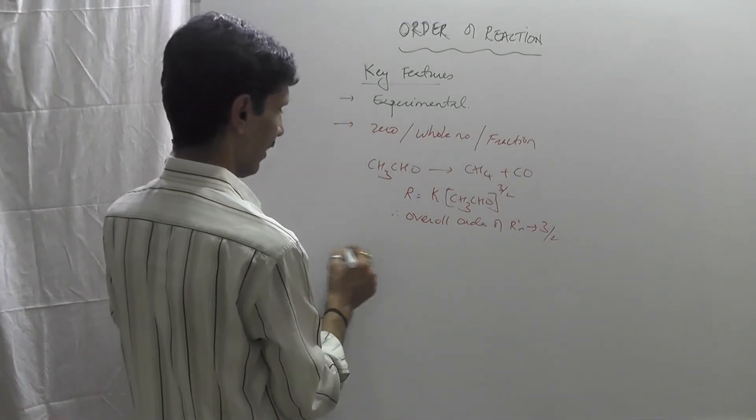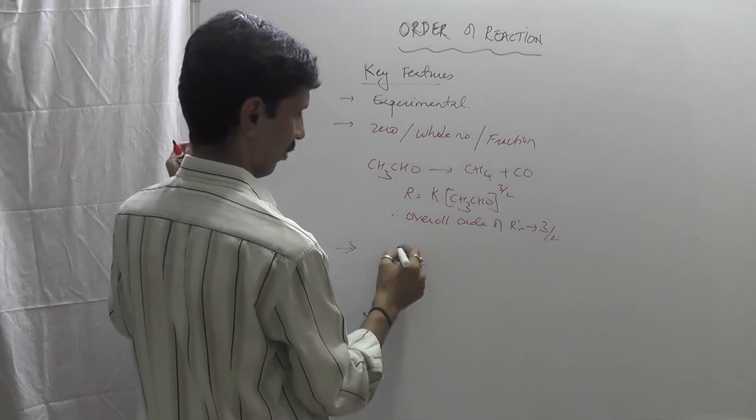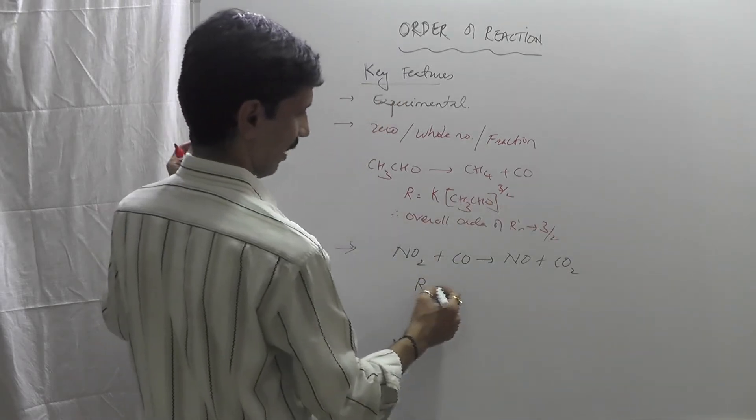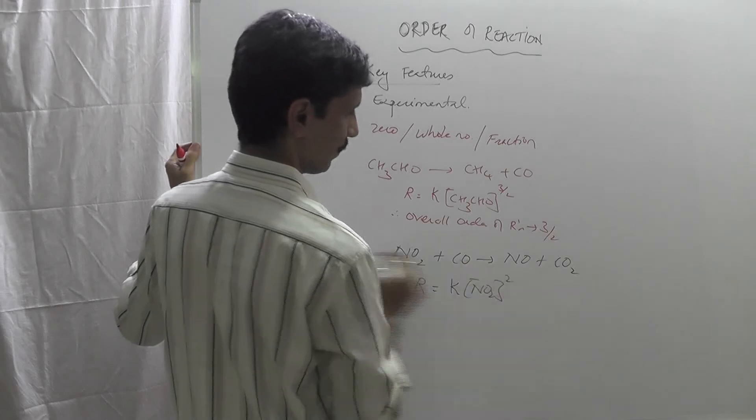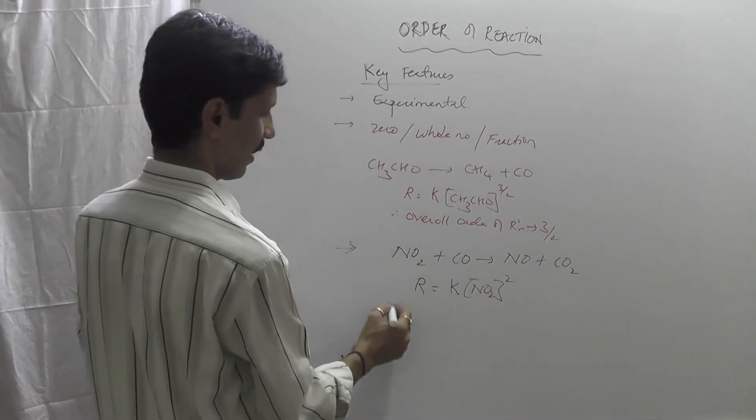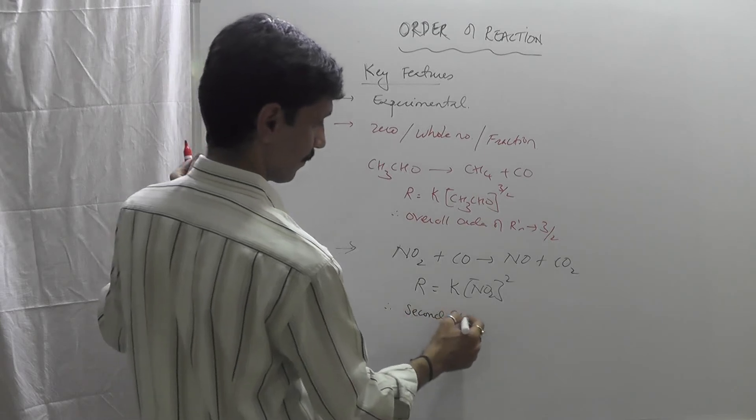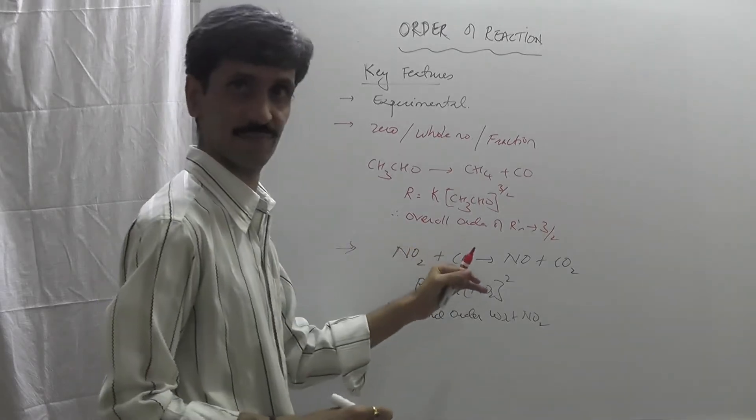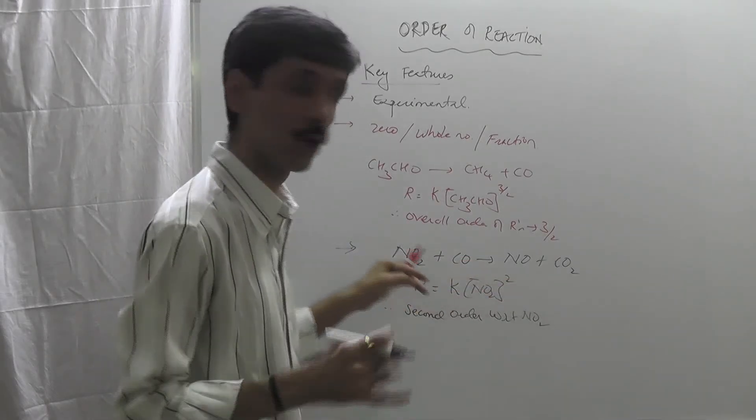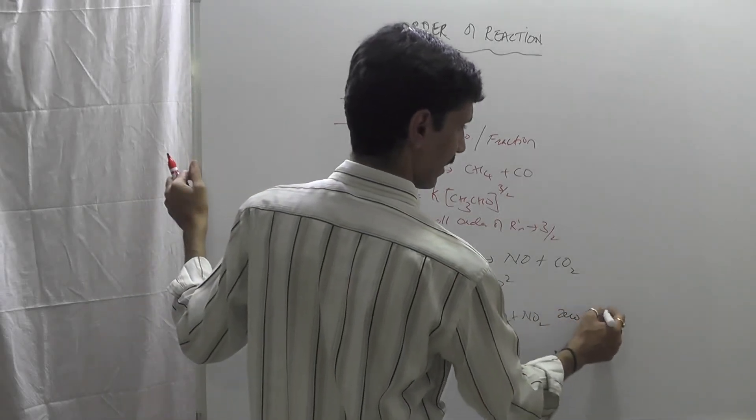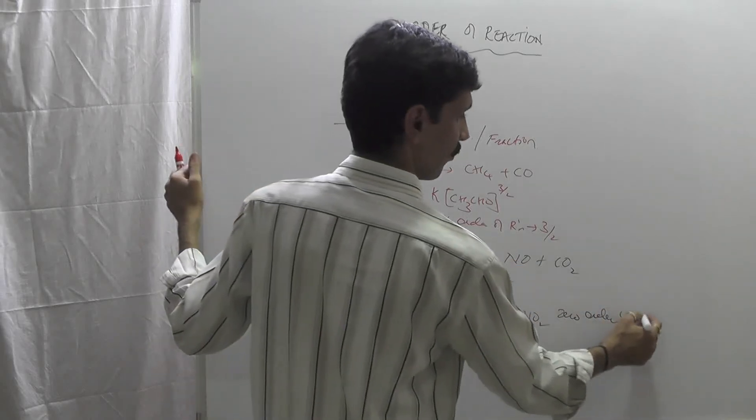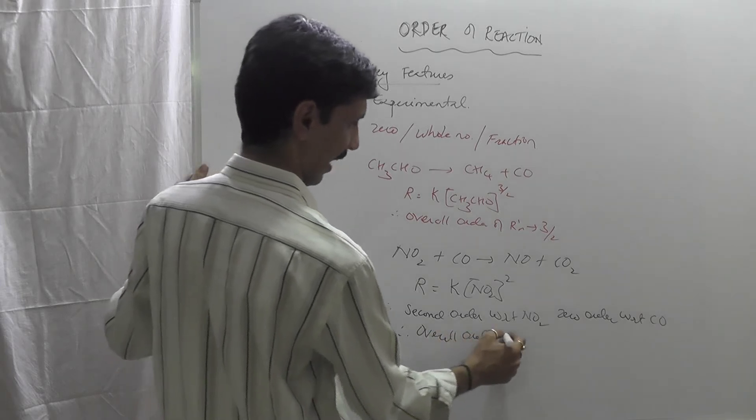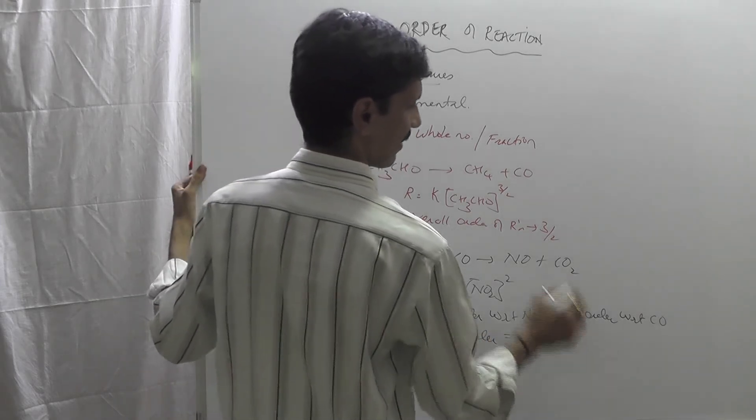Next one: now I give you another reaction, that is NO2 nitrogen dioxide plus carbon monoxide, it will give you NO plus CO2. Now the rate of this reaction R will be equal to K[NO2] raised to 2. This is the rate law expression. From this we find that it is second order with respect to NO2. But CO is a reactant in this particular reaction, but in the rate law expression is it appearing? No. So therefore zero order. So zero order with respect to CO. And therefore the overall order of this particular reaction is simple: 2 plus 0 is equal to 2. So it's a second order reaction.